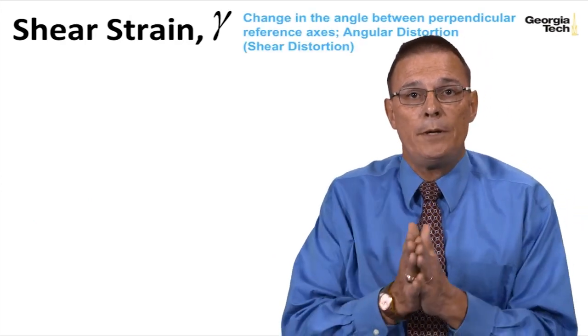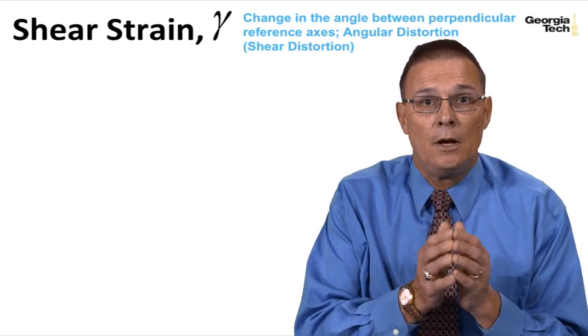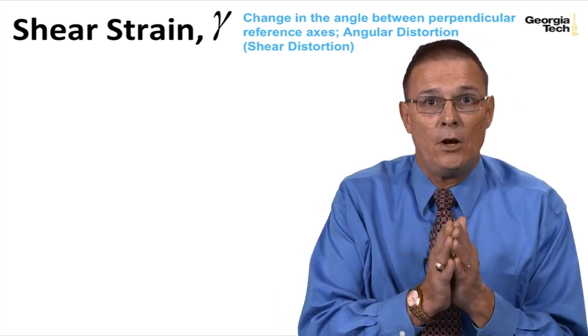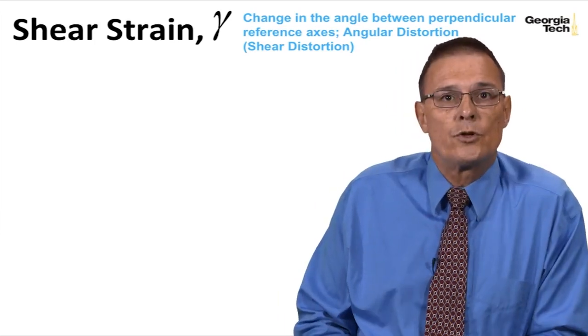And so now let's look at specifically shear strain, which is going to be a change in the angle between the reference axis, or what we're going to call shear distortion or angular distortion.